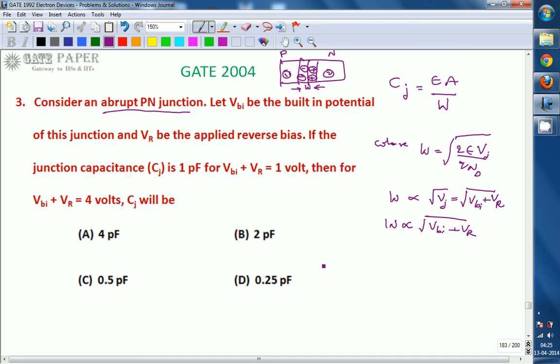From this we can say that Cj is proportional to 1 by W and W is proportional to square root of Vj for abrupt PN junction.